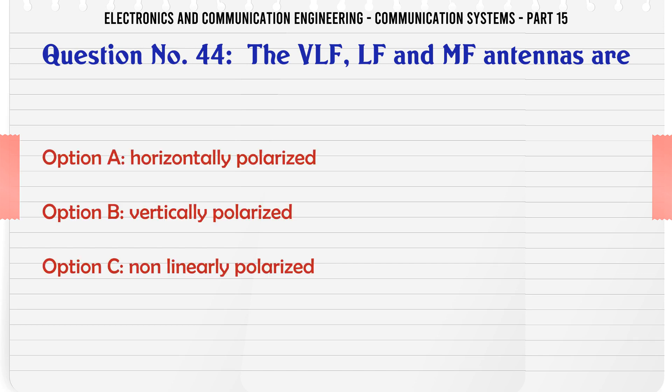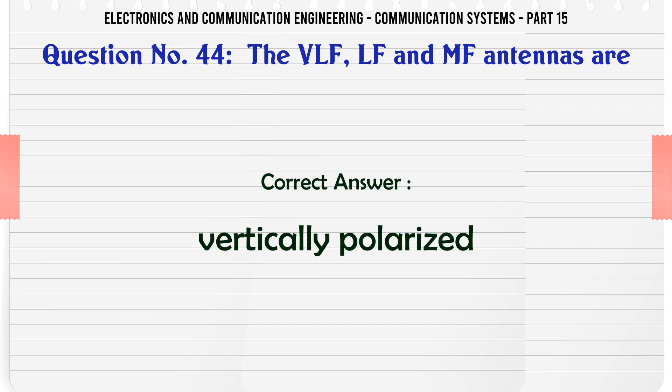The VLF LF and MF antennas are: A horizontally polarized, B vertically polarized, C non-linearly polarized, D either A or B. The correct answer is vertically polarized.